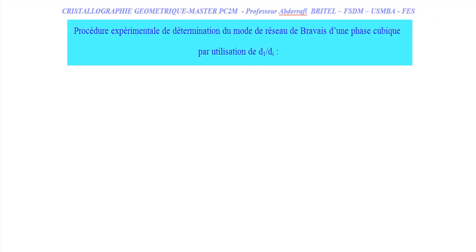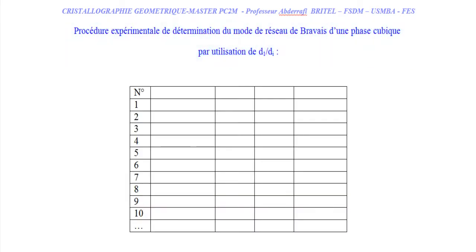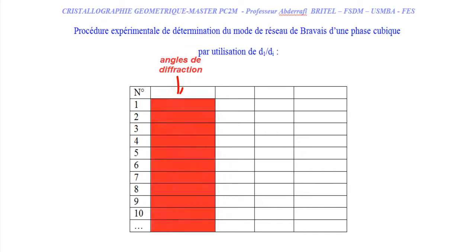The experimental process of determining the mode of Bravais of a cube using D1 is the following. The first thing to do is to remove the diffraction angles — the peaks or rays of diffraction.